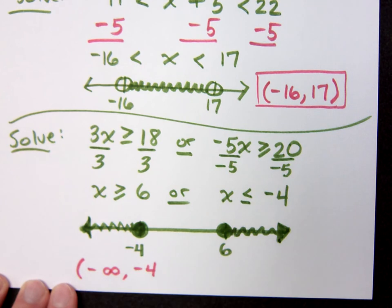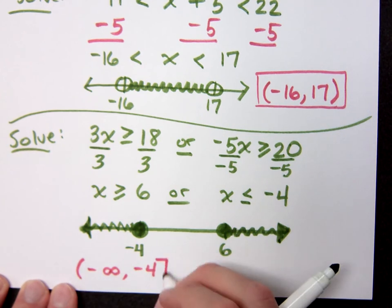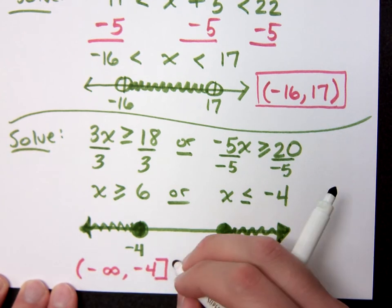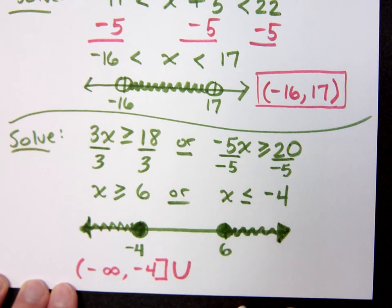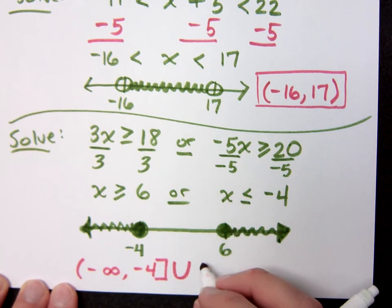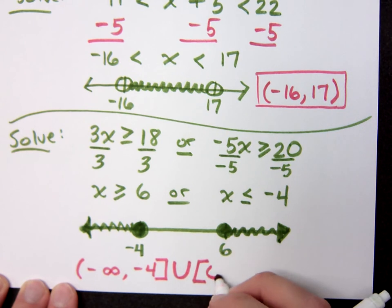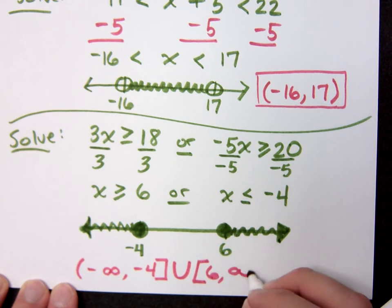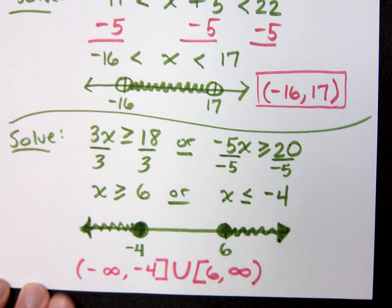Negative infinity to negative 4. What goes on the infinity? Parenthesis. What goes on the negative 4? Bracket. Bracket. And I'm going to use that little union symbol, and I'm going to have what for the other part? Bracket 6. Bracket 6 to infinity. Infinity. Any questions about that?